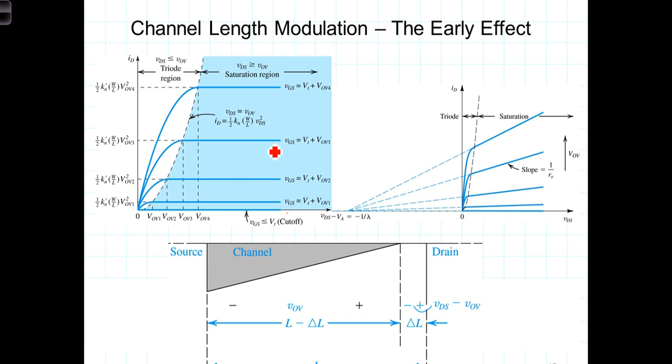But this isn't exactly true. It's an approximation. In reality, I-sub-D does increase as VDS increases in the saturation region.